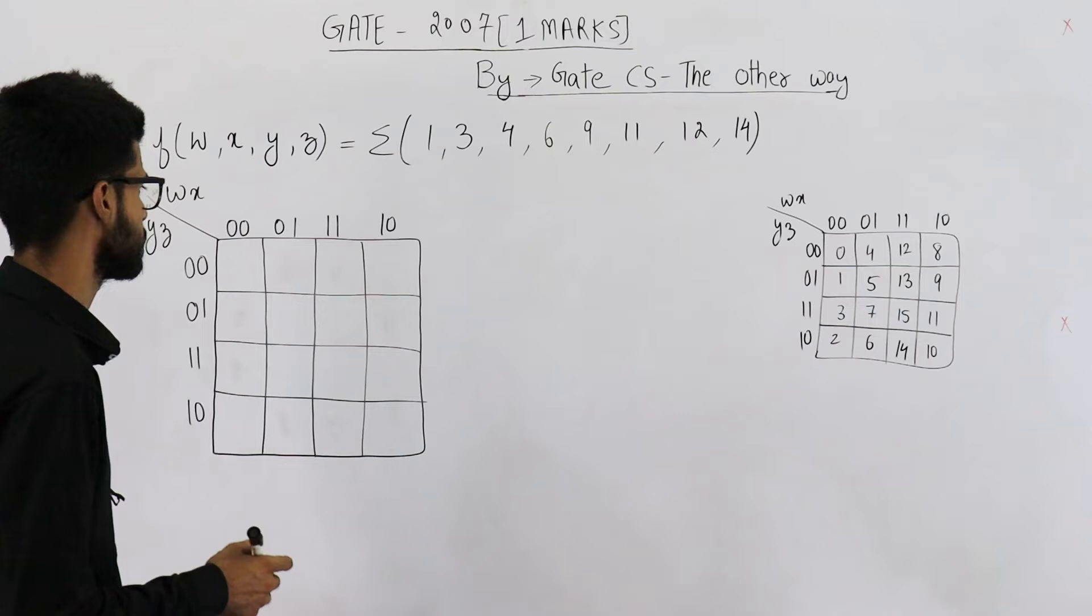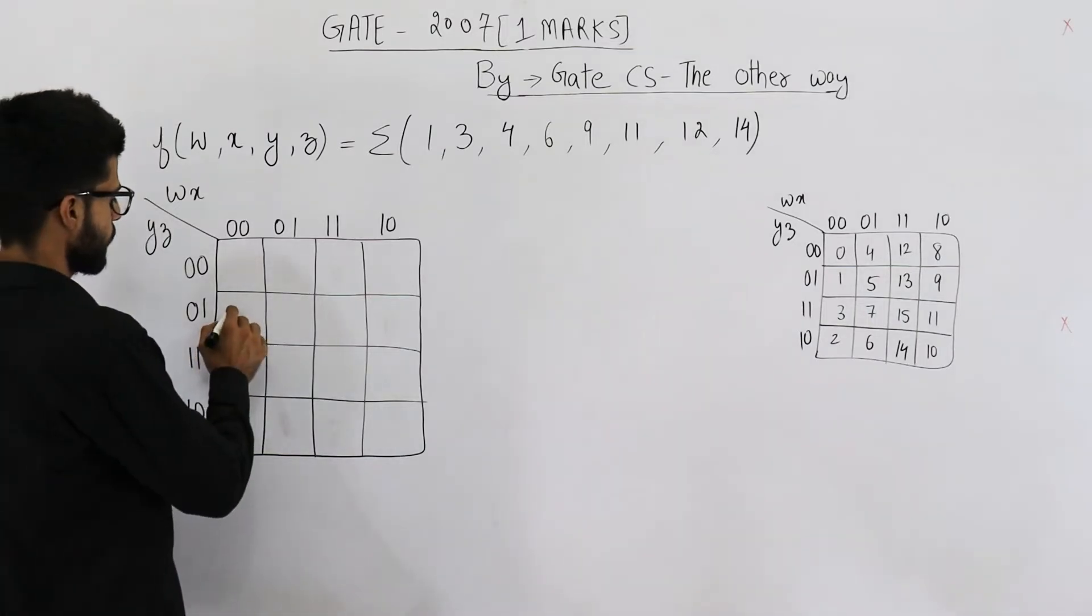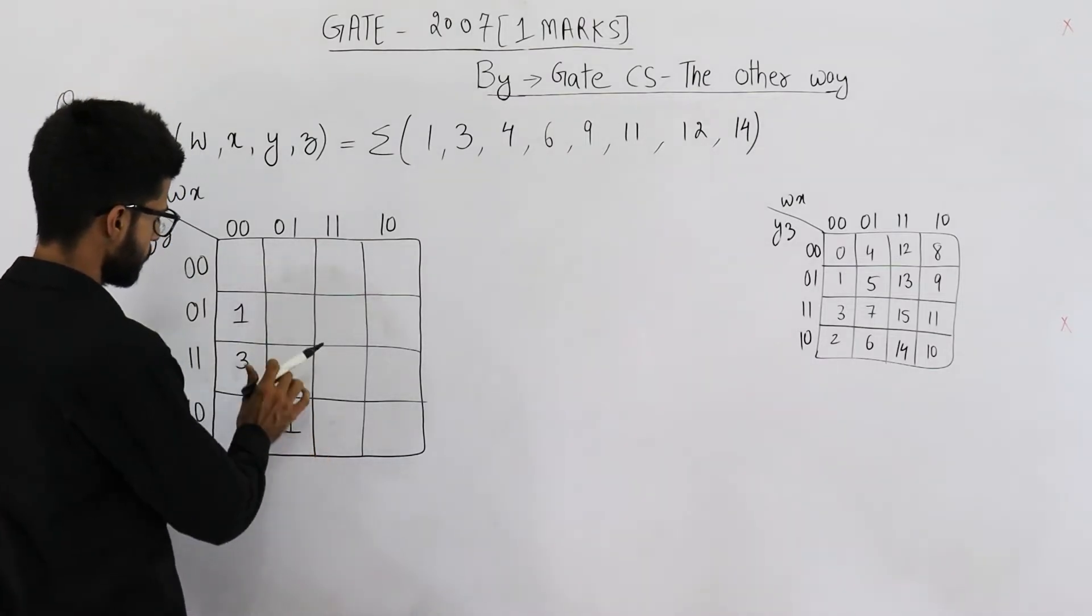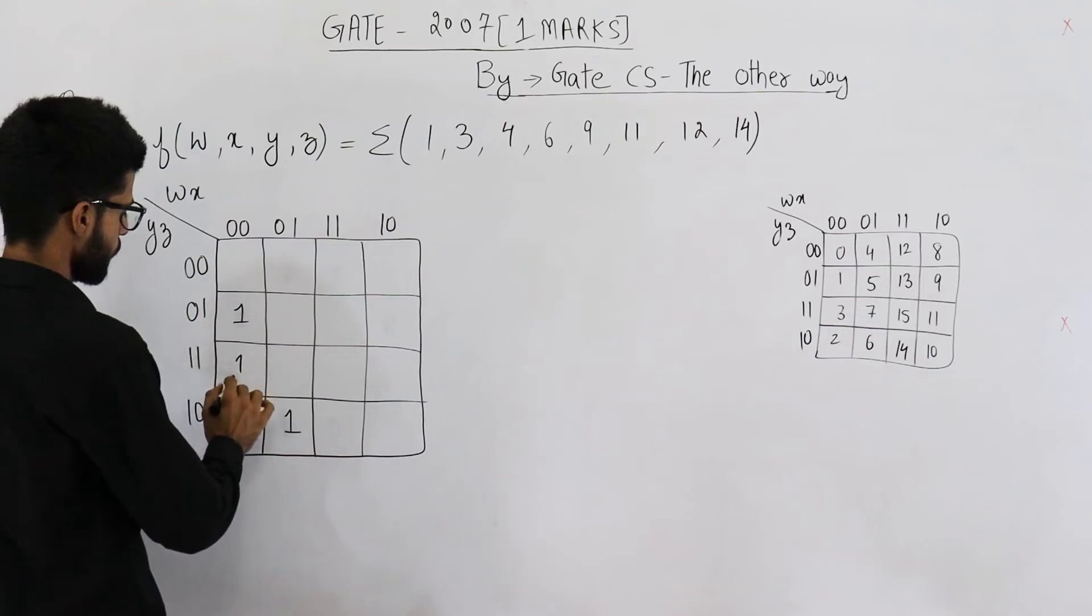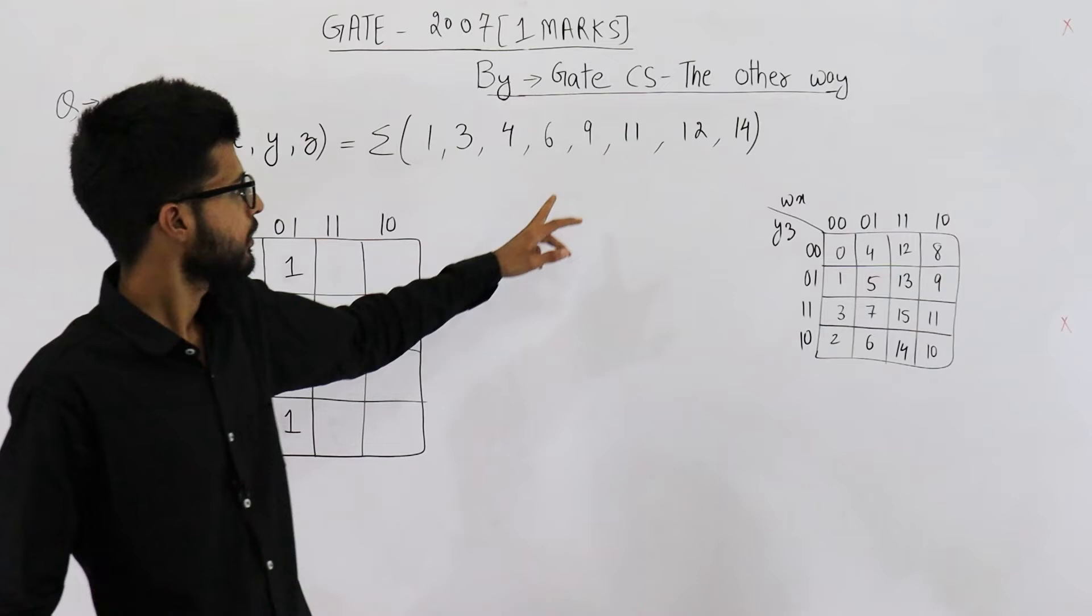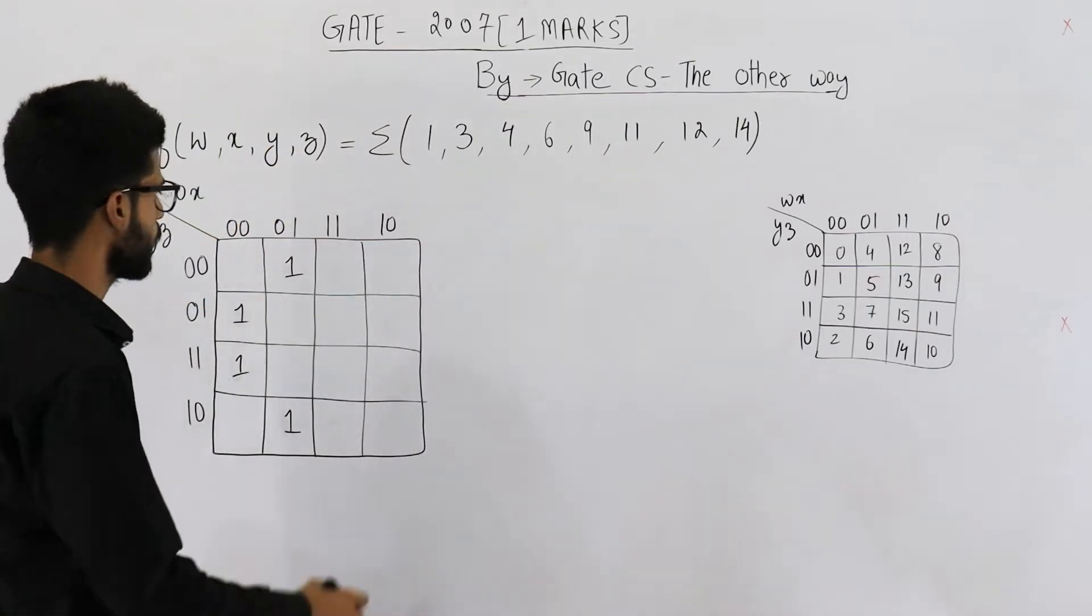They've given us all the minterms. The minterms are 1, 3, 4, 6. So we have 6 here and 4 here. Then you have 9, 11, 12. 12 is here.